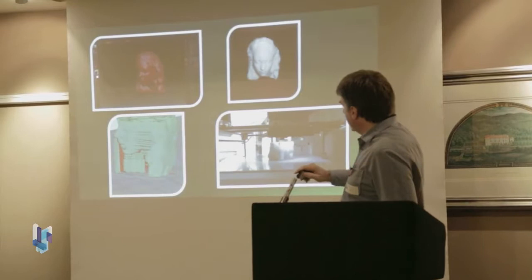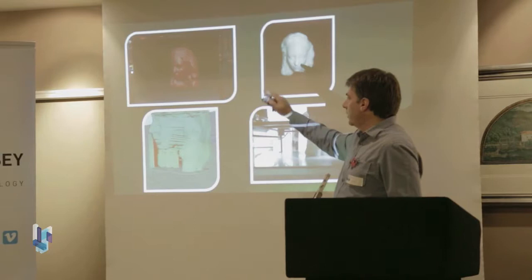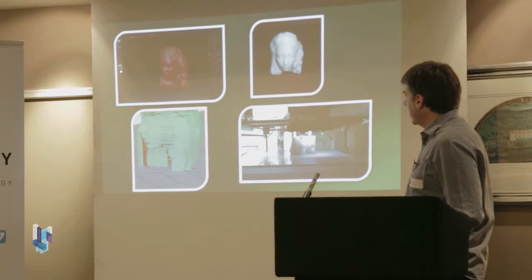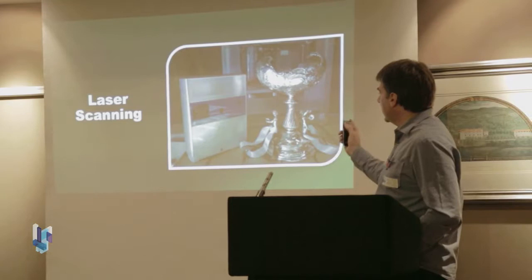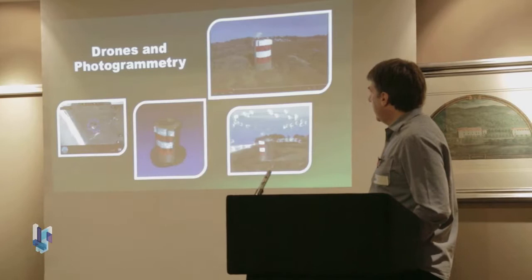I had my daughter close her eyes because it's quite bright, but I scanned her head in, did some work to clean up the model, and then printed out her head in 3D - that's upstairs to have a look at. There are other methods too. This is laser scanning - that's the Marathi Cup, and I'm using a laser scanner this afternoon to scan that in and produce it in 3D. A laser scanner shines a laser onto the object, can work out distances, and then reconstructs the object in three dimensions.